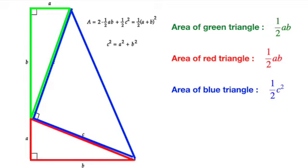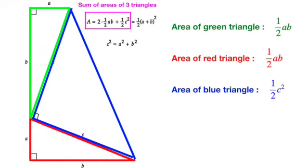For the first way, we add up the areas of the three right-angle triangles separately. Two of them have side lengths A and B, while the other one has side length C. Doing this gives us the expression on the left-hand side of the equation.